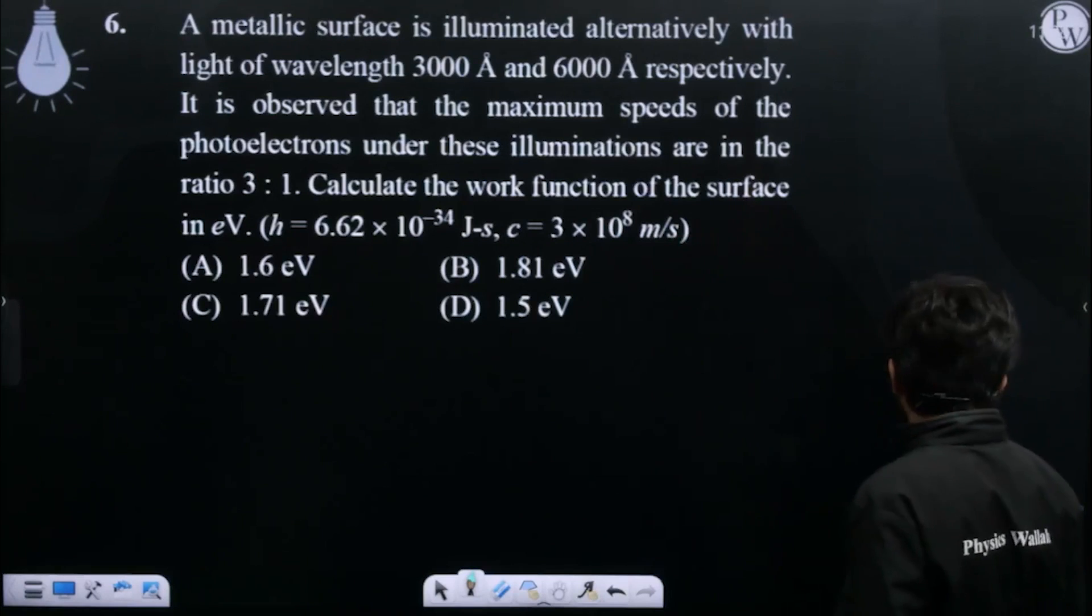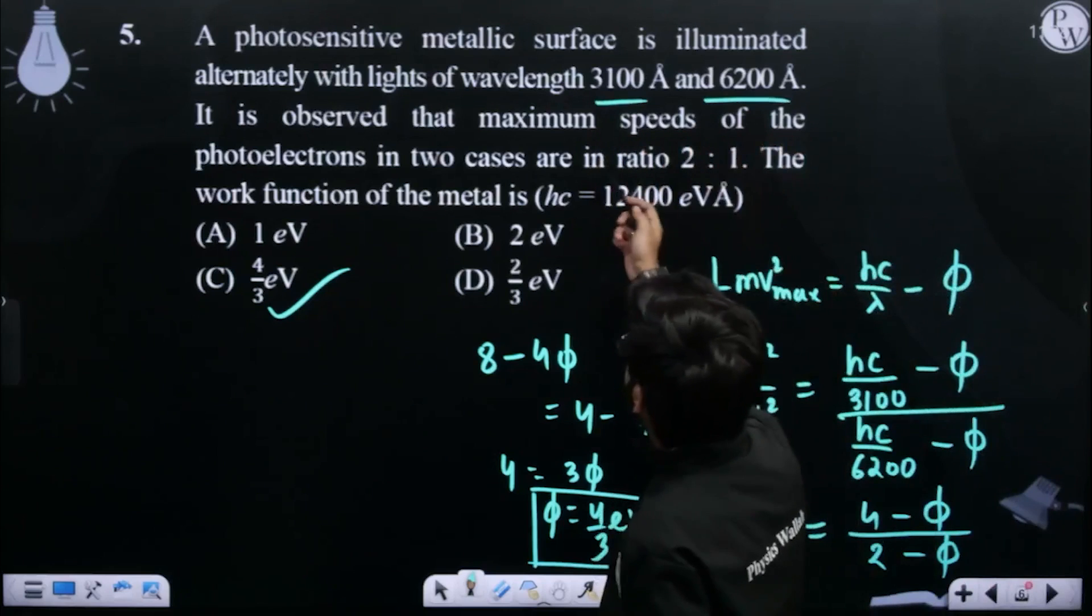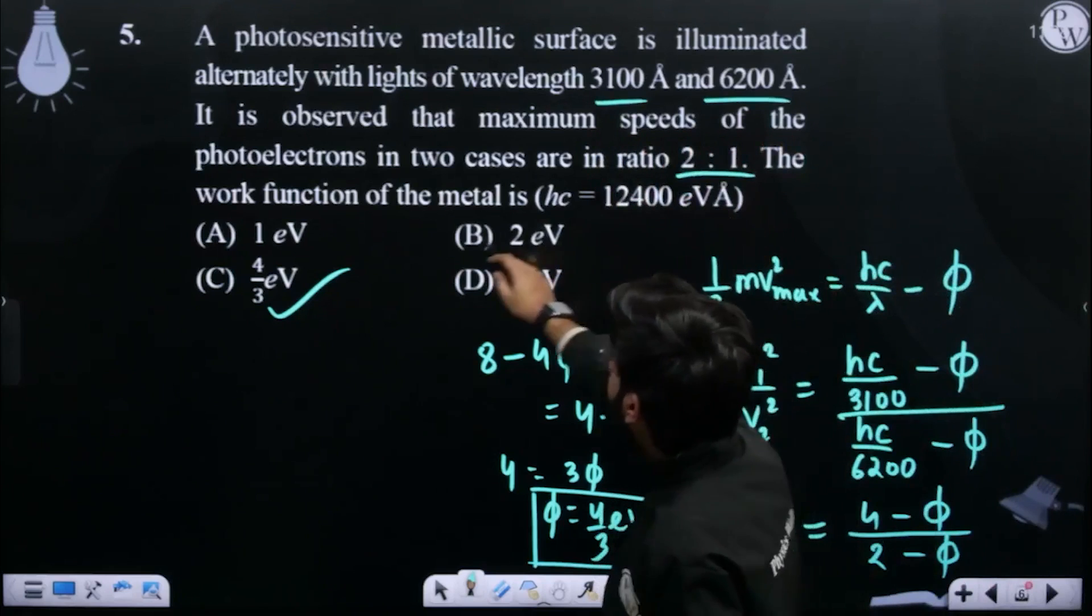The previous question was like this - two wavelengths were given and the maximum speed ratio was provided to find the work function.